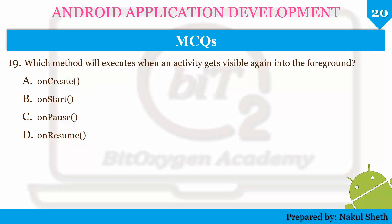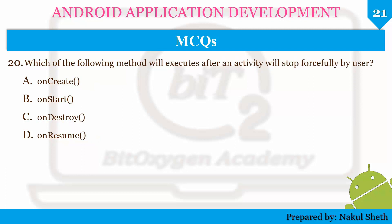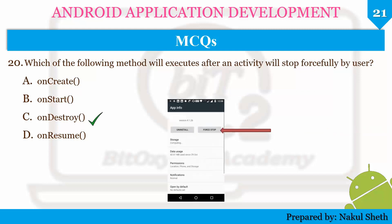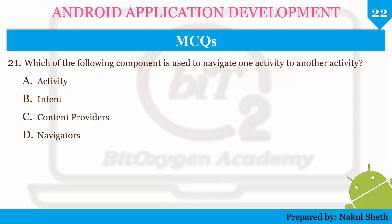Next question: which method will execute when an activity gets visible again in the foreground? The options are onCreate, onStart, onPause, or onResume. The correct answer is onResume. Next question: which method will execute after an activity is stopped forcefully by the user? The options are onCreate, onStart, onDestroy, or onResume. The correct answer is onDestroy — when you kill via force-off button, onDestroy method is called. The component used to navigate from one activity to another is Intent.